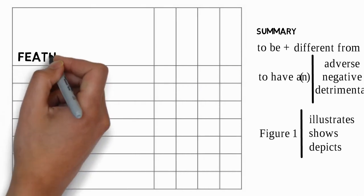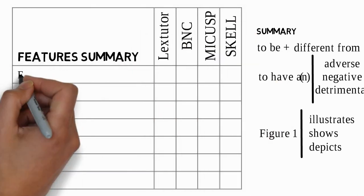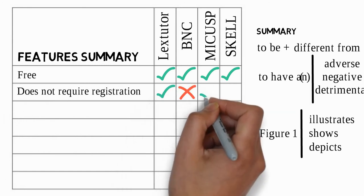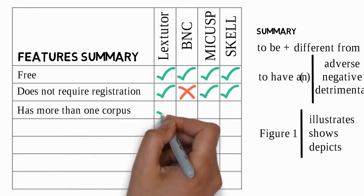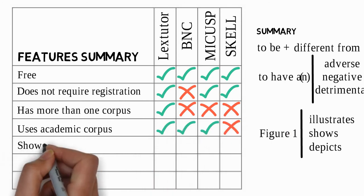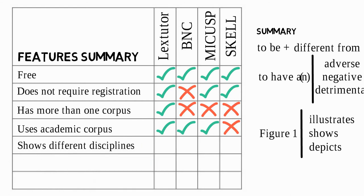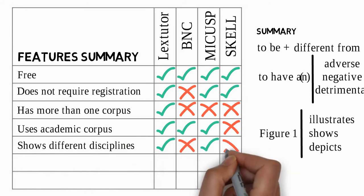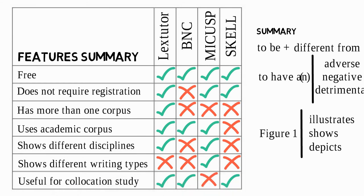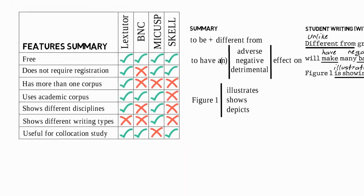Finally, let's summarize the different features of these concordancers: LexTutor, the BNC, MyCusp, and Skell. The good news is that all are free to use — the BNC requires registration first but the others don't. LexTutor is maybe the most powerful because it has more than one corpus, whereas the others use their own corpus. All use an academic corpus except Skell. If you want to see how words are used in different disciplines like biology, engineering, or economics, only LexTutor and MyCusp will do that. If you're interested in how words are used in different writing types like reports or argumentative essays, only MyCusp will do that. All are useful for collocation study, with the possible exception of MyCusp because the extracts are rather too long. In short, all concordancers have features which make them useful for academic English study.